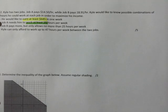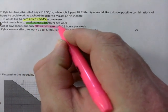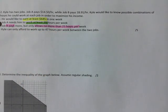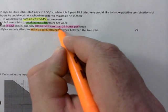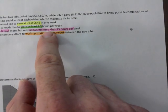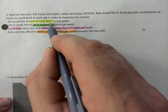Job B pays more but only allows no more than 25 hours per week — that's specific to job B. And then one more: you can only afford to work up to 47 hours per week between the two jobs — combining both. One constraint is specific to job A.